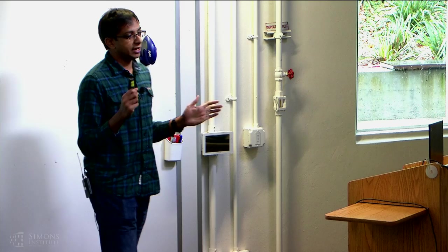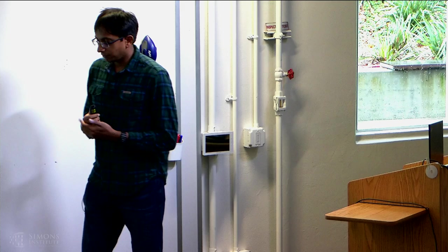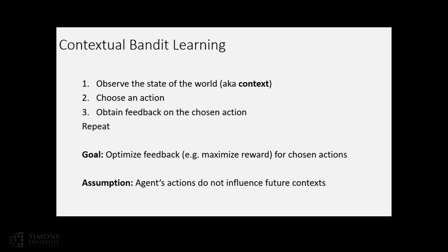A very quick snapshot of contextual bandit learning. The general setup is: there's an underlying state of the world which we call the context. We get to observe this, we choose an action, and we get to observe the reward on the chosen action. This is not reinforcement learning, so my actions have consequences only on the immediate reward, but they don't transform my future state.